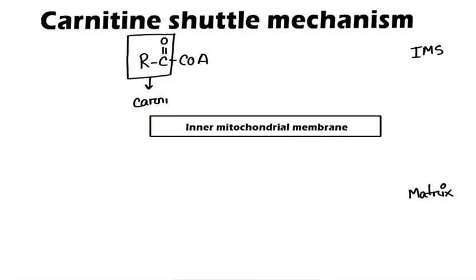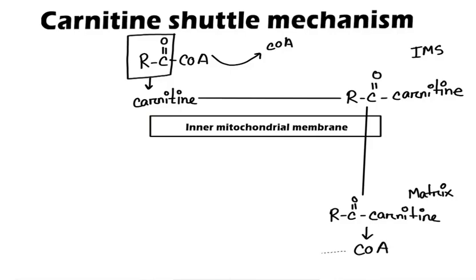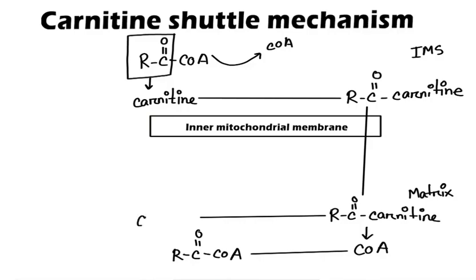Let's see how this process occurs. First, fatty acyl-CoA transfers its acyl group to carnitine and forms fatty acyl-carnitine. This process occurs in the intermembrane space with the help of carnitine transferase enzyme. The newly formed acyl-carnitine can easily pass through the inner mitochondrial membrane and enter into the matrix of mitochondria; translocase enzyme helps in this regard. Now in the mitochondrial matrix, acyl-carnitine again transfers its acyl group to CoA and regenerates fatty acyl-CoA in the mitochondria. After transfer, carnitine goes back to the intermembrane space to transfer more acyl groups. By this carnitine shuttle mechanism, fatty acyl-CoA finally reaches the mitochondrial matrix and is ready to be oxidized.